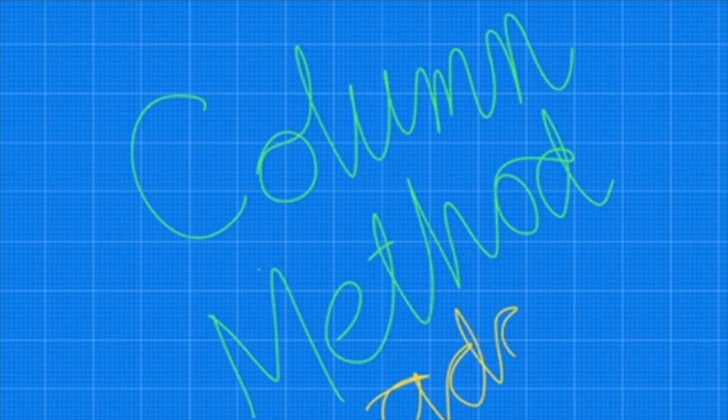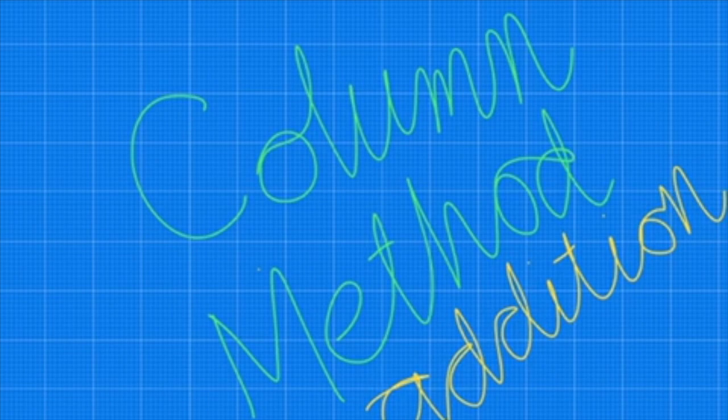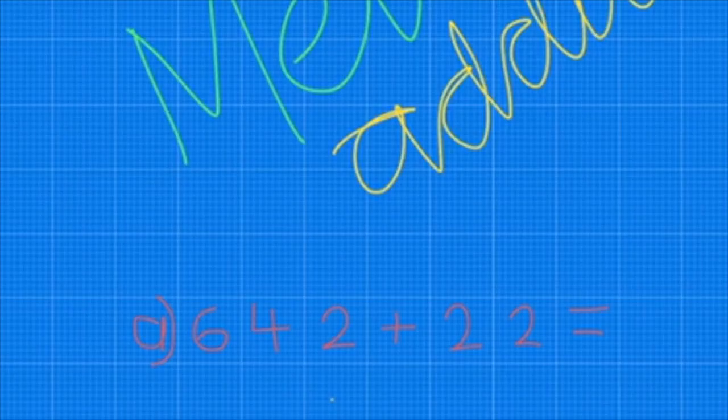This is a video about column method no regrouping in addition. This method is useful when we're looking at larger numbers and how to work them out. If we do the arithmetic question of 642 plus 22, the first thing I'm going to do is look at that number.